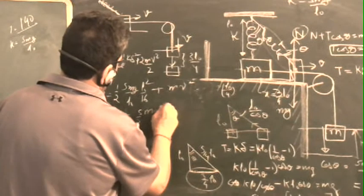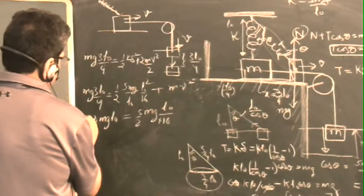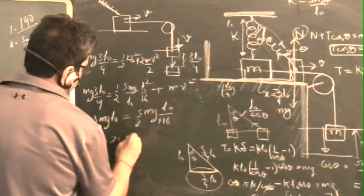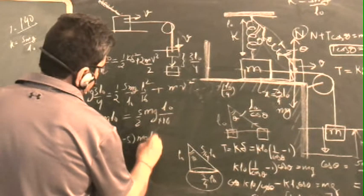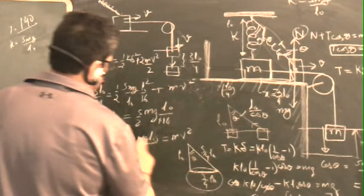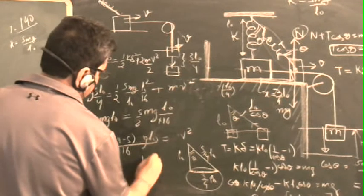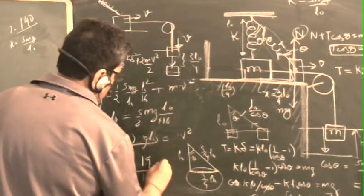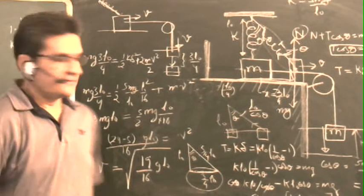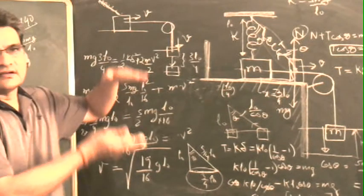Multiply by 8 here, so it becomes 24 minus 5 mg L0 upon 16 is MV square. Cancel M, so you get V is equal to square root of 19 upon 16 g L0. So that is the answer for the velocity when the mass is just getting lifted from this surface.